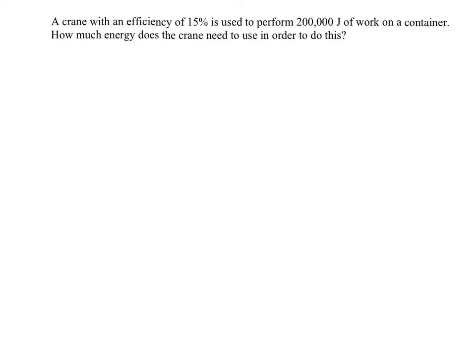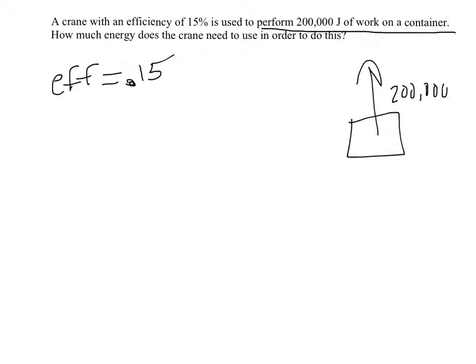And now we get to the problem that more often than not, people get wrong. Let's write down our variables again. Our efficiency is 15%, or 0.15. It's used to perform 200,000 joules of work on a container. How much does the crane need to use in order to do this? So this is where it might be a little unclear. Is this work in or work out we're talking about? Well, we're lifting the container, and it says that 200,000 joules of work is done on the container. So that implies that it's useful work, or work out, is 200,000.